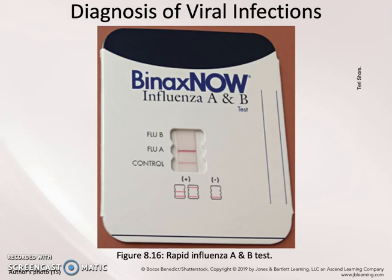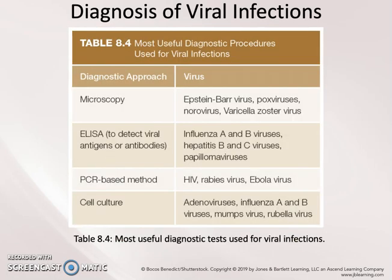On the other hand, other rapid tests can look for antigens. Antigens come from the pathogen and can indicate only a current infection with the virus. Other means of diagnosing viral infections include ELISA, which also detects viral antigens or antibodies in a very quick way, or a PCR-based method. PCR is specific to the DNA or RNA of a viral particle and does not look for proteins from the viral particle like ELISA does.